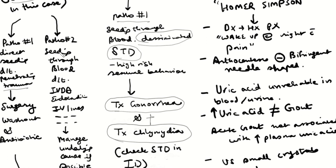The other route is hematogenous — through the blood. Examples include IV drug use, endocarditis, or infected IV lines seeding the blood with Staph aureus, which then travels to the joints. The goal is to manage the underlying cause: if IV drug abuse, stop it; if endocarditis, treat it; if IV lines are the issue, remove them. The seeding source must be controlled, or the joint will keep getting re-infected.